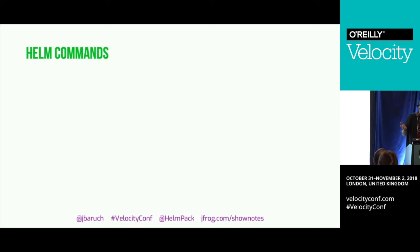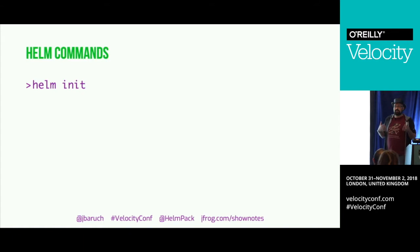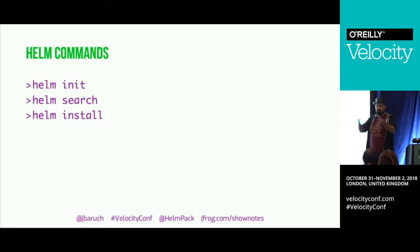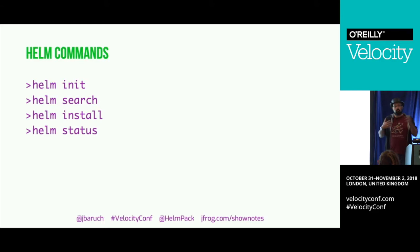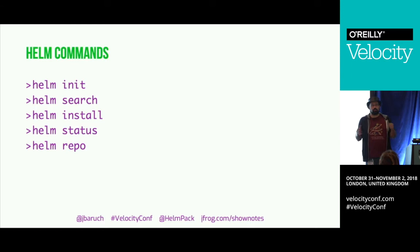Basic commands: 'init' establishes the connection to Tiller. 'search' searches for Helm charts in the Helm repository. 'install' installs a chart from a repository into your Kubernetes cluster. 'status' shows you what is installed. And 'repo' is a command to work with repositories.